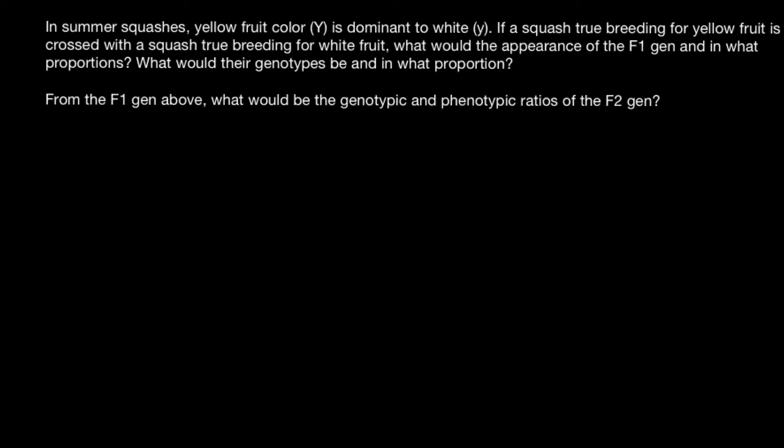Hello and welcome to Nikolai's genetics lessons. Today's problem: in summer squashes, yellow fruit color (YY) is dominant to white (yy). If a squash true breeding for yellow fruit is crossed with a squash true breeding for white fruit, what would be the appearance of the F1 generation and in what proportions? What would the genotypes be and in what proportion?